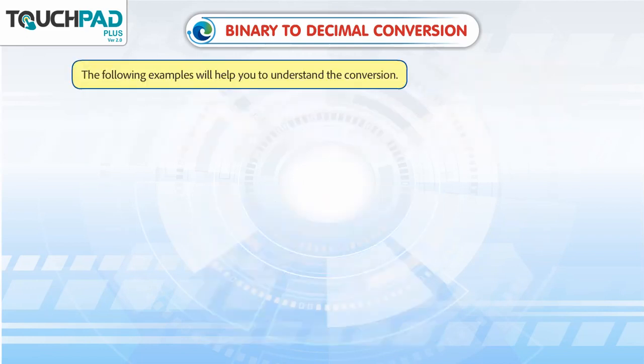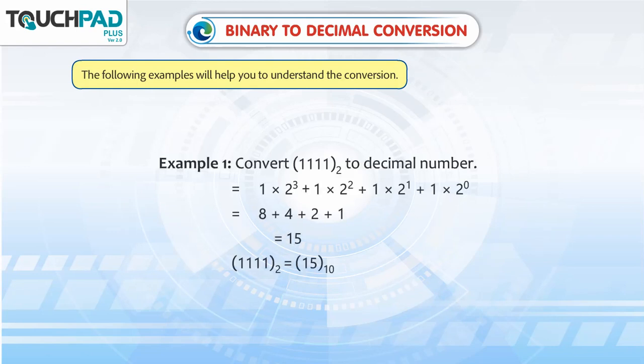The following examples will help you understand the conversion. Example 1: Convert 1111 base 2 to a decimal number.